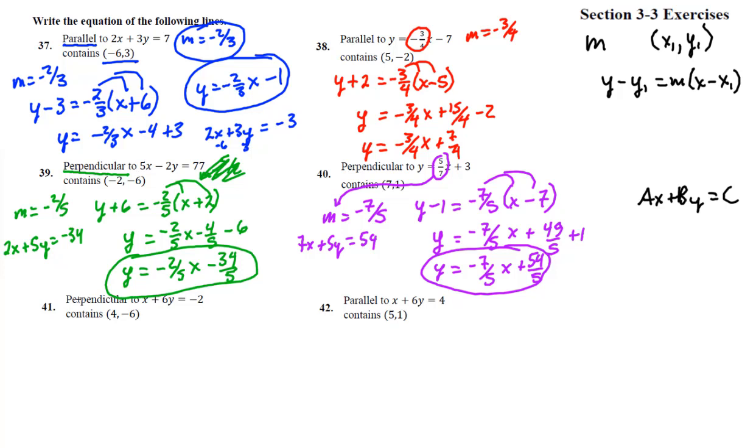Great. Number 41, perpendicular to x plus 6y equals negative 2. So this slope is negative 1 sixth. We don't want it, we want a perpendicular slope, not the slope that was given to us. So we will use slope of negative reciprocal 6 over 1. So that gets us y minus y1, so that's y plus 6 equals m times x minus 4. Oh, why did I write the m? I've got the m right over here, it's a 6. Yeah, there we go, x minus 4.